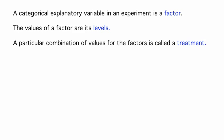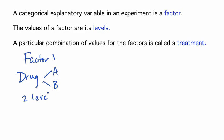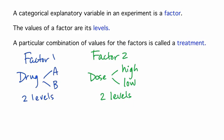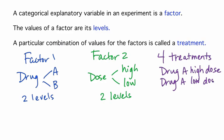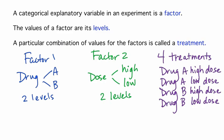As an example, imagine a study comparing two drugs — drug A and B — each at two different doses, high and low. Then in this situation, we have two factors, each with two levels, but four different combinations: drug A and high dose, drug A and low dose, drug B and high dose, and drug B and low dose. So in this case, there are four treatments.